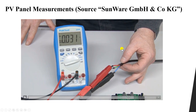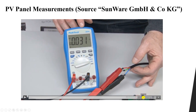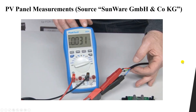The output current is very small due to the weak irradiation. In this lesson you learned more about PV panel parameters and how to measure the open circuit voltage and short circuit current.